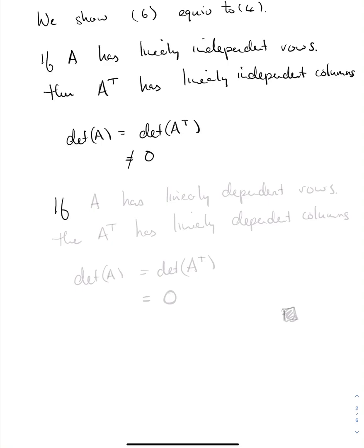If, on the other hand, 6 is not true and A has linearly dependent rows, by a similar trick, we know that A transpose has linearly dependent columns. So the determinant of A is equal to the determinant of A transpose, and since it has linearly dependent columns, its determinant is zero. So if 6 is not true, 4 is not true. Thus, we've proved that 6 is equivalent to 4. This ends the proof. QED.